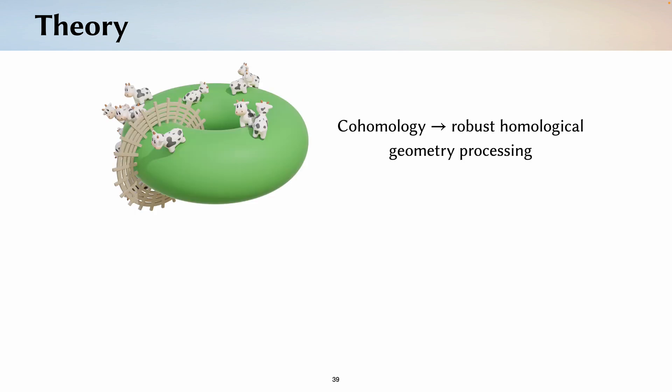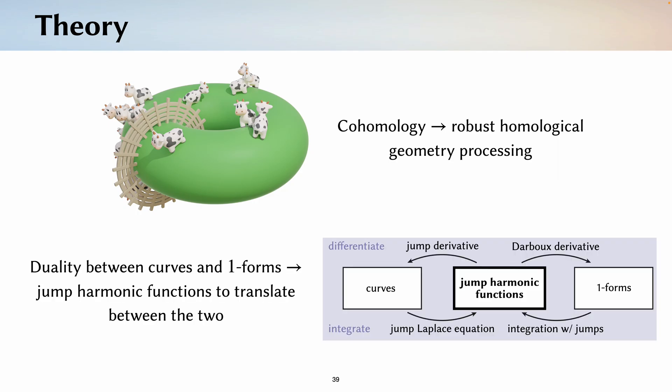Now let's wrap up. So, there's a lot of cool theory that I glossed over, but the concepts that underlie our method are those of homology and cohomology. In particular, we're able to take advantage of the duality between curves and differential one-forms using jump harmonic functions to translate between the two. This is what allows us to reason about curves as vector fields.